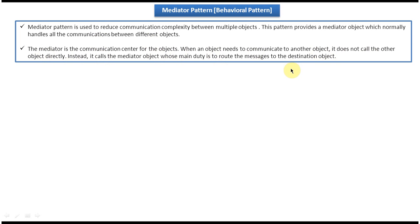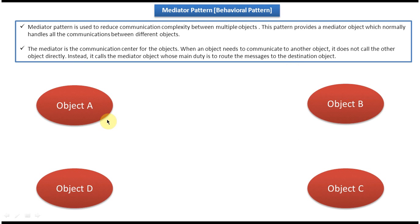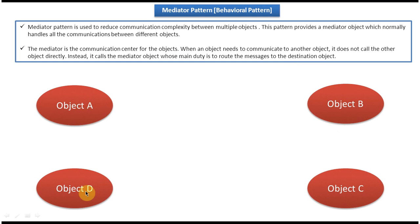I will show you one diagram so that you will understand this explanation very clearly. Here you can see four objects: Object A, Object B, Object C, and Object D. Object A wants to communicate some message to Object B or Object C, and Object D wants to send some message to Object A.